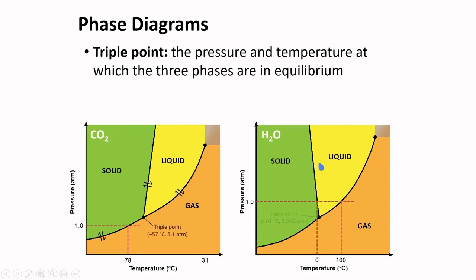The phase diagram also shows triple points. This is the pressure and temperature at which three phases are in equilibrium. At 0.01 degrees Celsius and 0.006 atmosphere, there is a solid, liquid, and gas present at this point. And they are all in equilibrium.